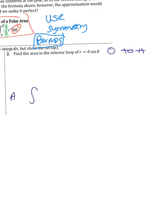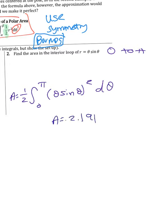The area is the integral from zero to pi of one half times r squared d theta, where r is theta sine theta. So the area equals the integral from zero to pi of one half times (theta sine theta) squared d theta. When you put this into the calculator, you get that the area is 2.191. A couple of common errors: forgetting about the one half, and forgetting about the squared sign when you're typing in the integral. Make sure you apply the squared sign to the entire r value — you might need to add parentheses.